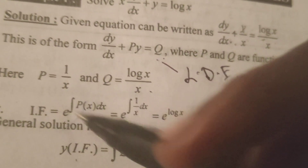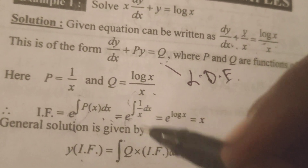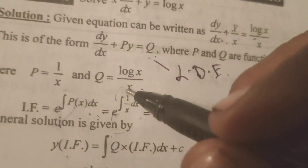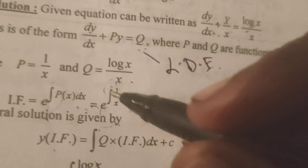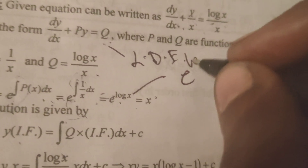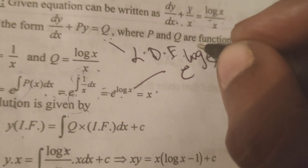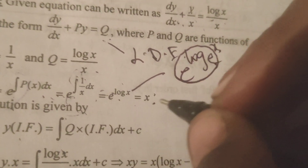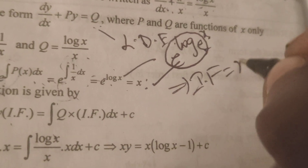The integrating factor formula means e power integral of P(x) dx. That equals to e power integral of P(x) dx. What is P(x)? It is 1 by x. So e power integral of 1 by x dx. The integral of 1 by x means log x. Therefore, e power log x — since the base is e, e power log base e equals 1 — so e power log x gives us x. Therefore the integrating factor equals x.